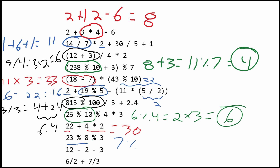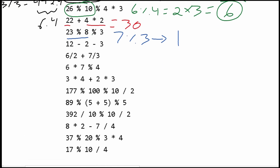Then we take the modulus of 7 using 3. Next, we have 12 minus 2 minus 3, and that is going to be 7. Then we have 6 divided by 2, which is 3, and we add this to 7 divided by 3, which is 2, giving us the value 5.